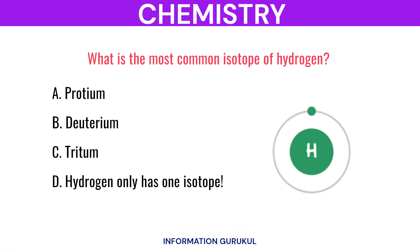What is the most common isotope of hydrogen? Protium.